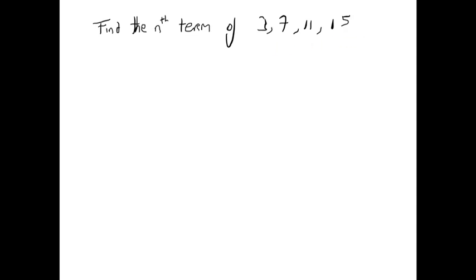How can we tell that it's a linear sequence? Well, there's a common difference between each term. Between 3 and 7 is 4, between 7 and 11 is 4, 11 and 15 is 4, and so on. That's called the first difference. If the first difference is constant, then it's a linear sequence that we're dealing with.